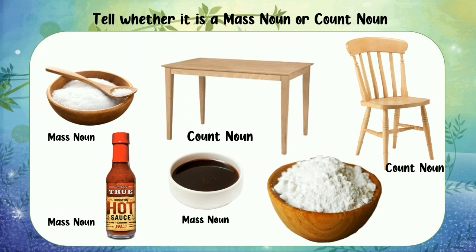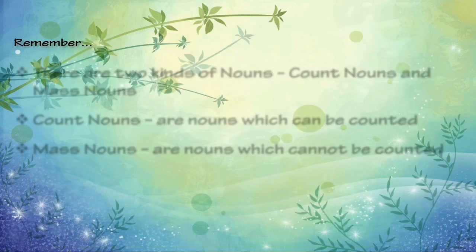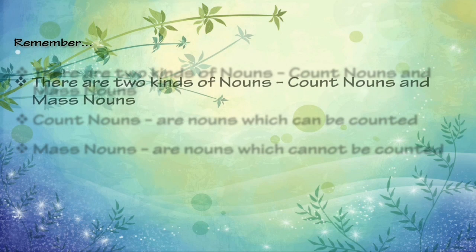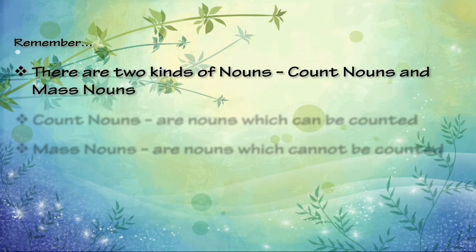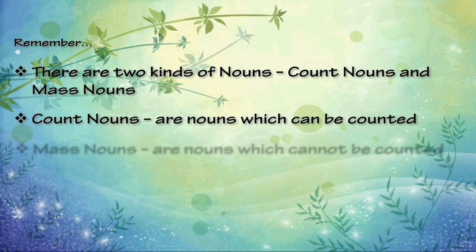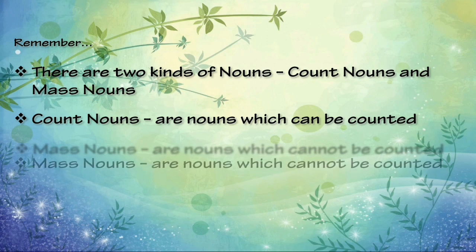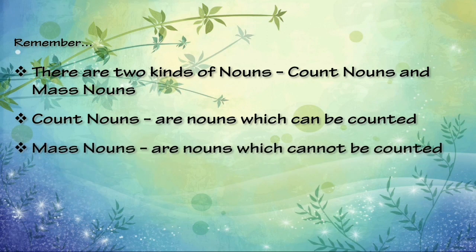How about a flower? Is a flower a count noun or a mass noun? You're right again! A flower is a count noun. Let us always remember that there are two kinds of nouns: the count nouns and mass nouns. Count nouns are nouns which can be counted, while mass nouns are nouns which cannot be counted by themselves.